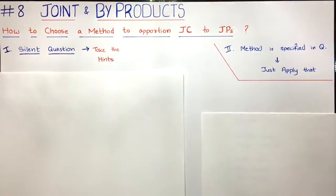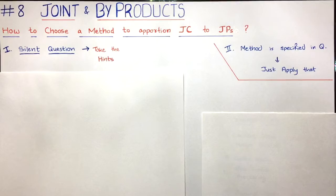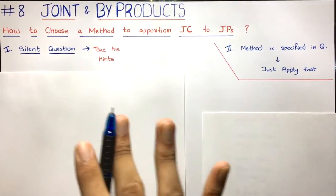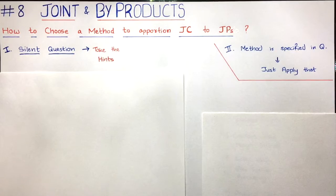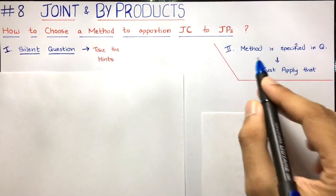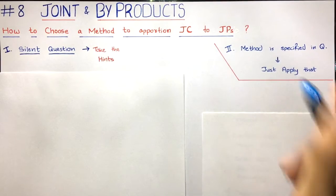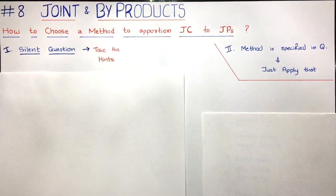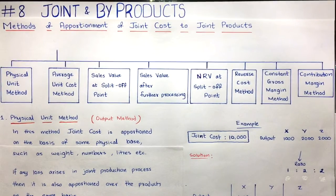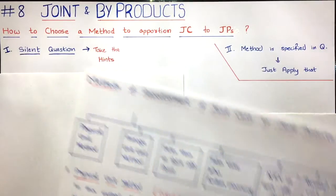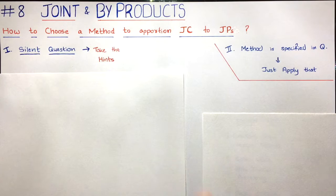Now, how simple it is to choose a method for apportioning joint cost to joint products. Basically, you can get two types of questions in the exam. The first is a silent question — the question will be completely silent and will not tell you what kind of method to apply, so you have to use your judgment. In the second type, the method is specified in the question — it will specifically ask you to apply, for example, the NRV method, average unit cost method, or physical unit method. Then you just do the mechanical work.